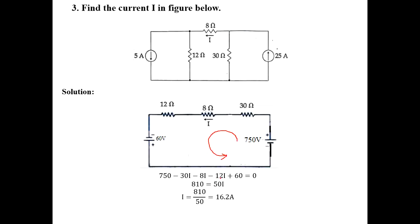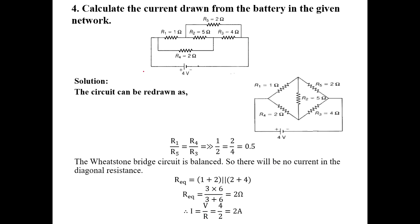Apply KVL to the loop. With 750 volts as the dominant voltage: 750 minus 30I minus 8I minus 12I plus 60 equals 0. The resistor drops are negative (voltage drop), and the 60-volt source contributes positively (arrow enters negative terminal). Solving this equation gives the current I.